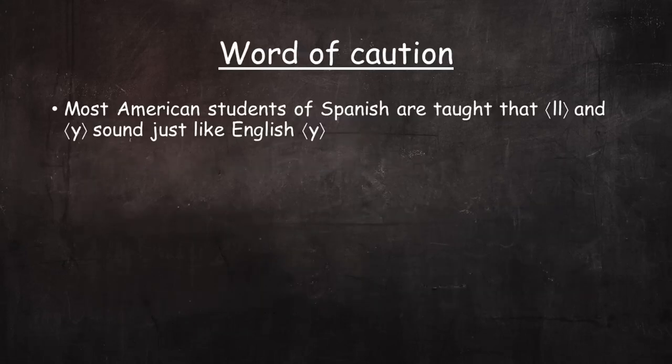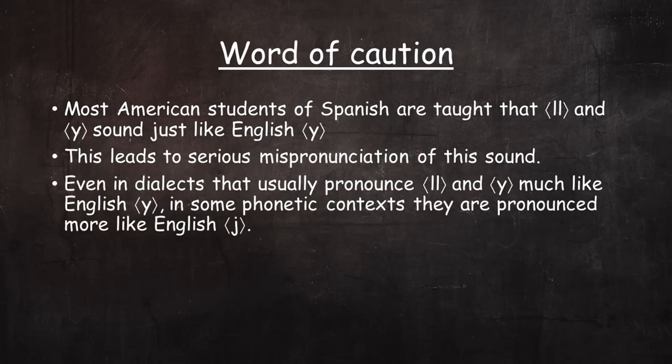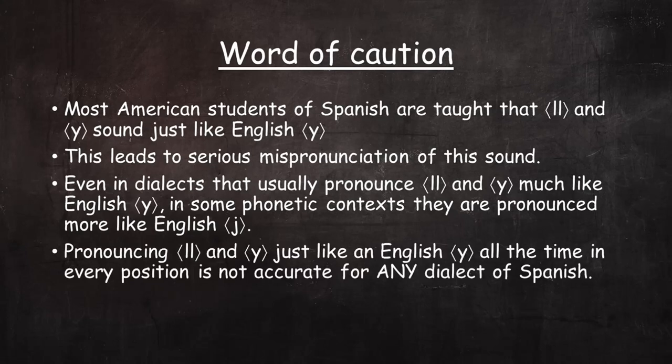One word of caution: most American students of Spanish are taught that double L and Y sound just like English Y, and that's how they pronounce them. This practice leads to serious mispronunciation of this sound. Even in dialects that usually pronounce double L and Y much like English Y, in some phonetic contexts they're pronounced more like English J. Pronouncing these sounds just like English Y all the time in every position is not accurate for any dialect of Spanish.